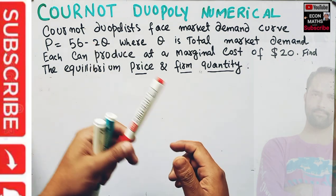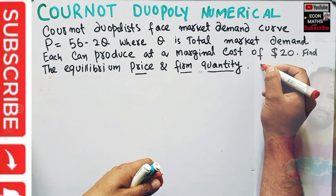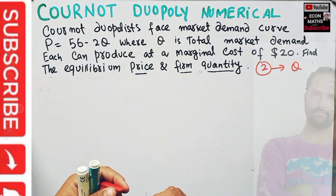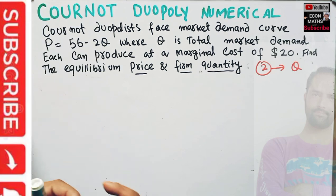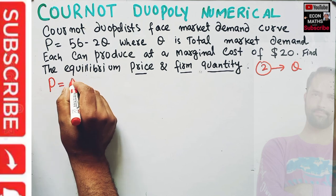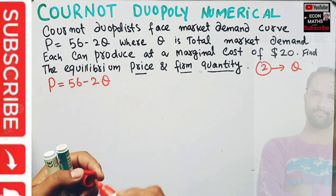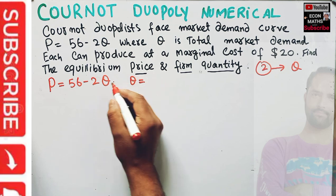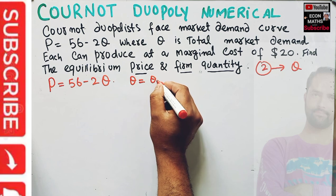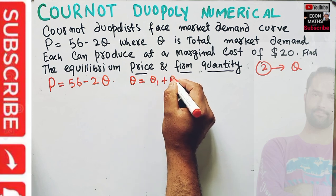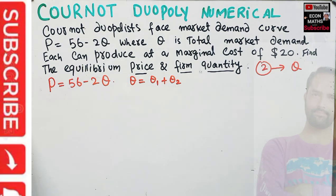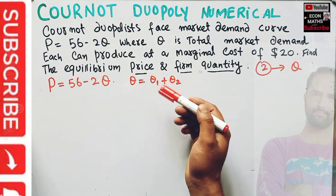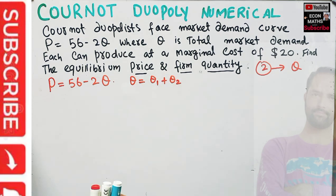In the Cournot duopoly model, we have two firms that compete in terms of quantity. The total market demand is P = 56 - 2Q. Since we have two firms, total output Q equals the output produced by the first firm plus the output produced by the second firm, that is Q = Q1 + Q2.